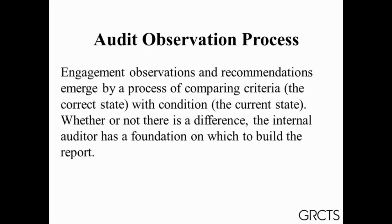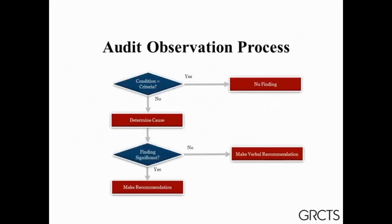The engagement observations and recommendations emerge by a process of comparing the criteria — which is the correct state — with the condition — which is the current state, what's actually being done. Whether or not there's a difference, the internal auditor has a foundation on which to build a finding. Let's graphically look at the audit observation process. The first thing you're going to do is look at whether the condition and the criteria are the same. Is what they're doing the same as what the criteria calls for? If the answer is yes, then there's basically no finding. If the answer is no, then we've got to do some things.